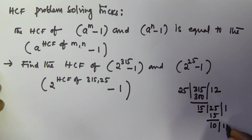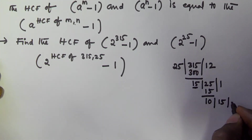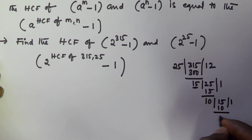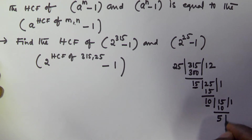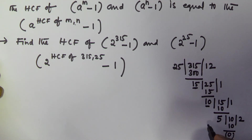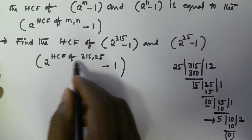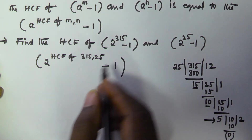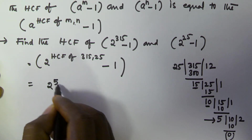Now we divide 25 by the remainder 15, which gives us a remainder of 10. Then we divide 15 by 10 and get remainder 5. Then 10 divided by 5 gives remainder 0, so the last divisor is 5. The HCF of 315 and 25 is 5.